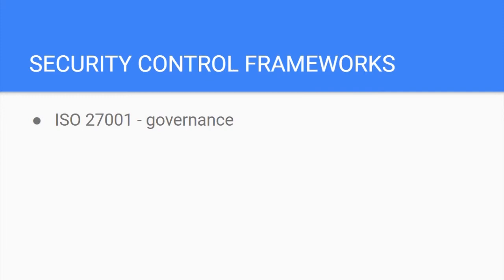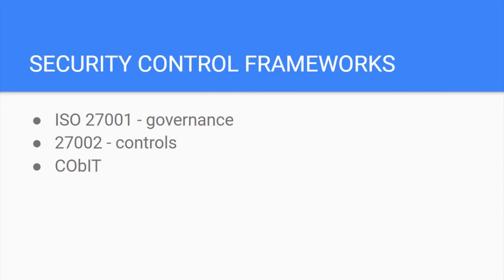Security control frameworks in the CBK include ISO 27001. ISO stands for the International Standards Organization. 27001 focuses on information security management systems, which is basically governance. 27002 covers security controls. I plan to do an entire video on the ISO series and how to remember them, so be sure to look out for that one.